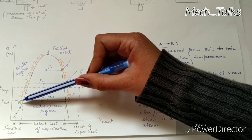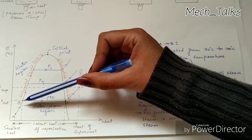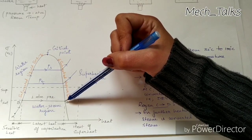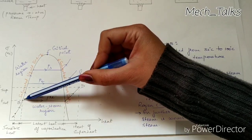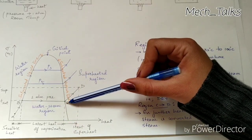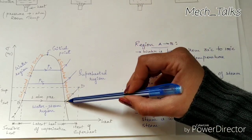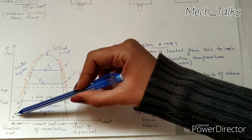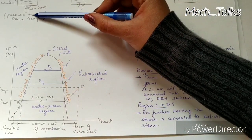On further heating, steam starts forming. From point B, slowly as time passes, the water gets converted into steam. At point C we have 100 percent steam. Point B indicates completely water — the saturated liquid point — whereas point C indicates the saturated vapor or saturated steam point. On further heating this dry saturated steam at point C, at point D we get superheated steam. This curve ABCD is drawn for one atmospheric pressure.